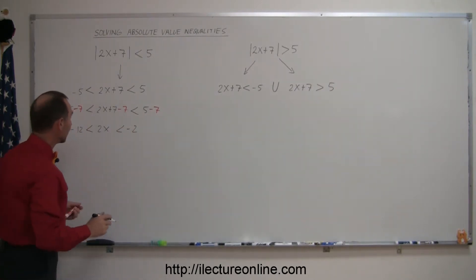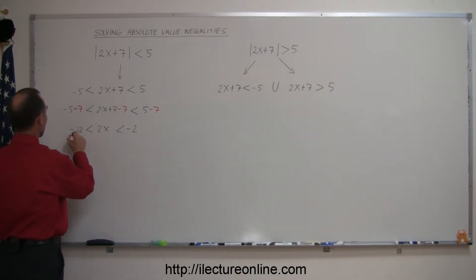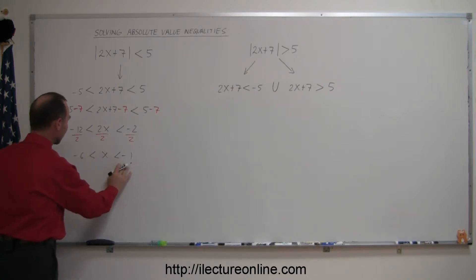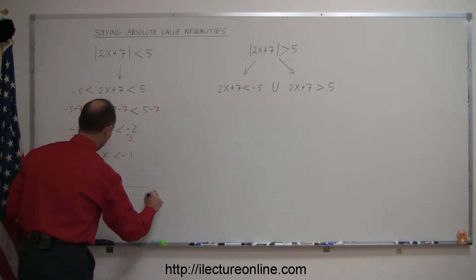The next thing you want to do is get rid of the 2. So, you're going to divide everything by 2. Divide that by 2, divide that by 2, divide that by 2. And now we get minus 12 divided by 2 is minus 6, less than x, which is less than negative 1. So, here it tells you that x must lie between negative 6 and negative 1, which could be illustrated graphically.